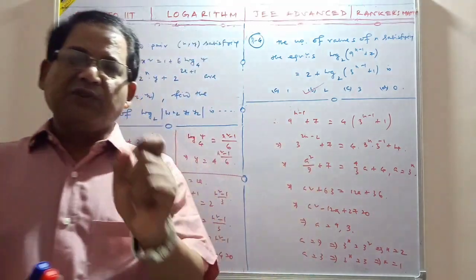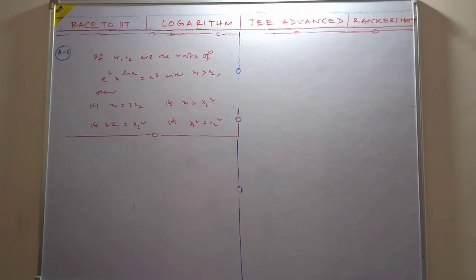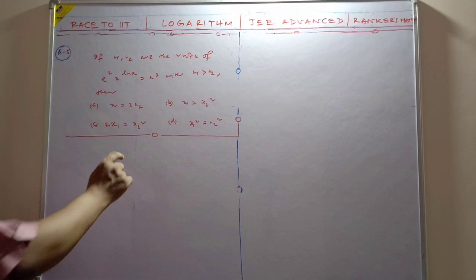Now for JEE Advanced: if x1 and x2 are solutions of e²·x^(ln x) = x³ — here the base is e. Taking log: log(e²) + ln(x)·log(x) = 3·log(x). Let a = log_e(x). Then 2 + a² = 3a, so a² - 3a + 2 = 0. So a = 1 or a = 2, giving log_e(x) = 1 or 2.